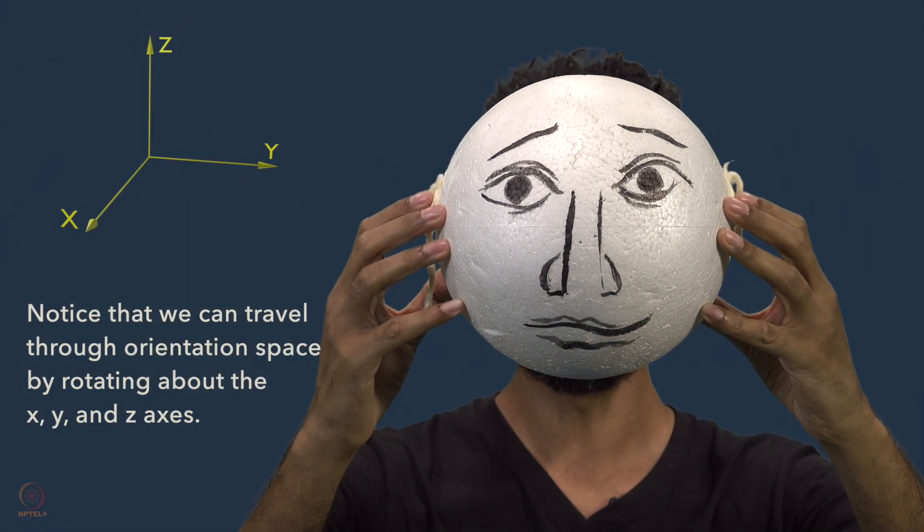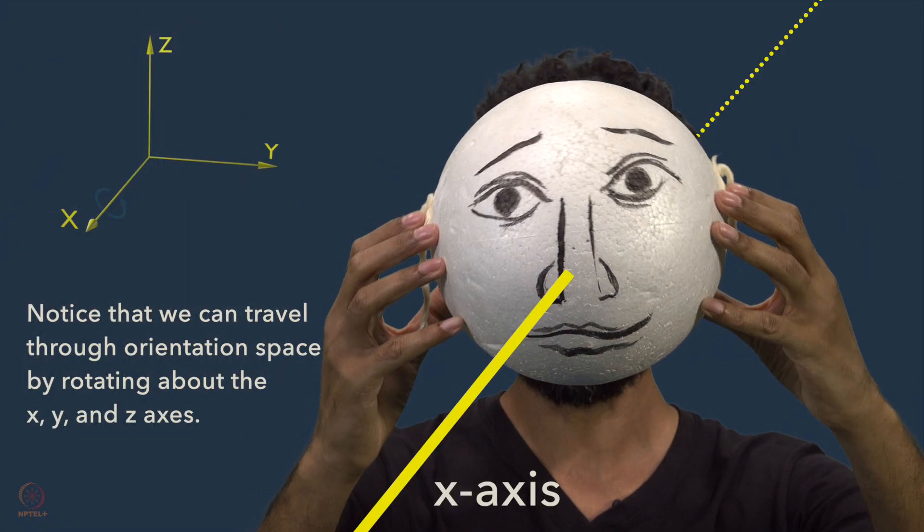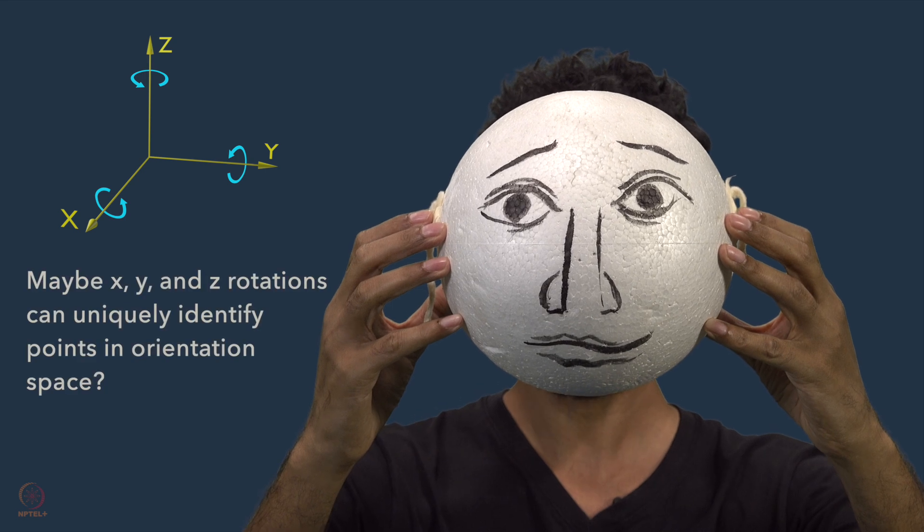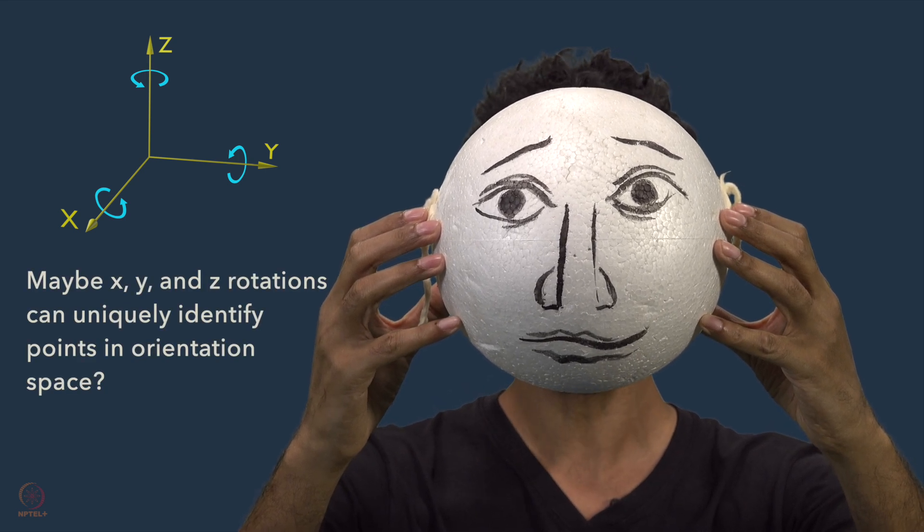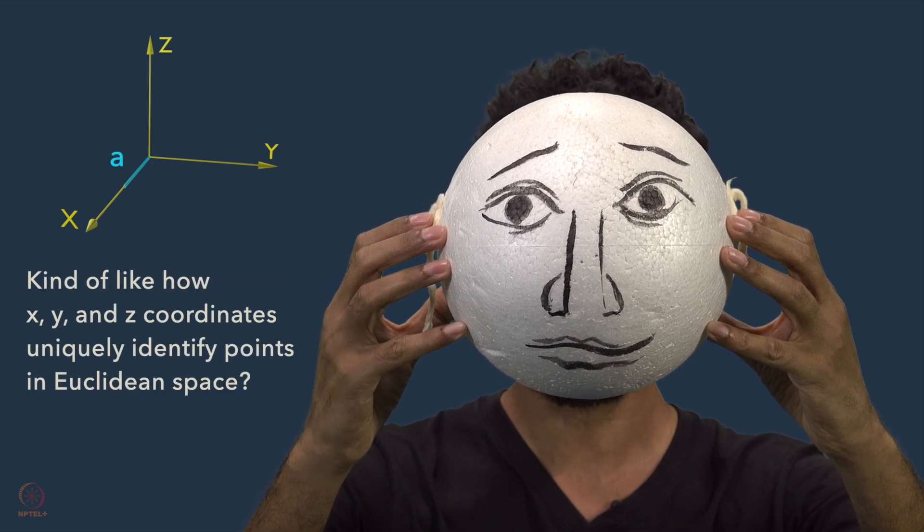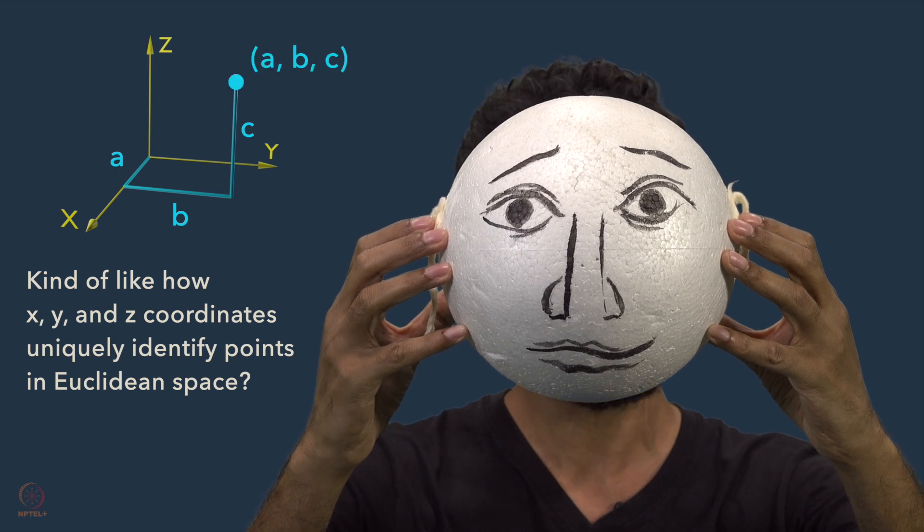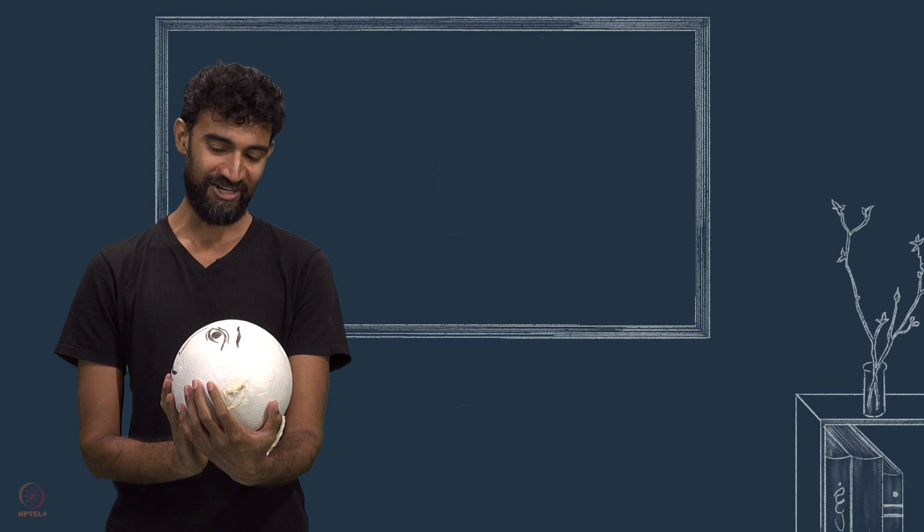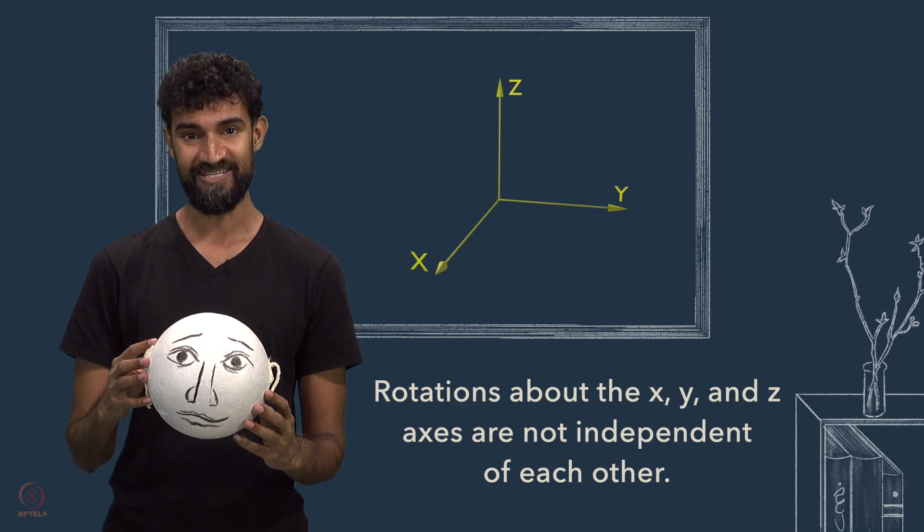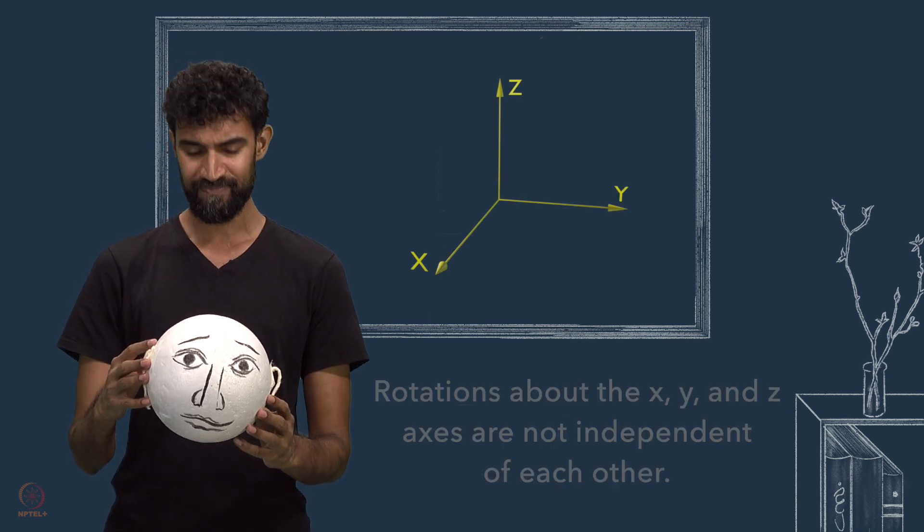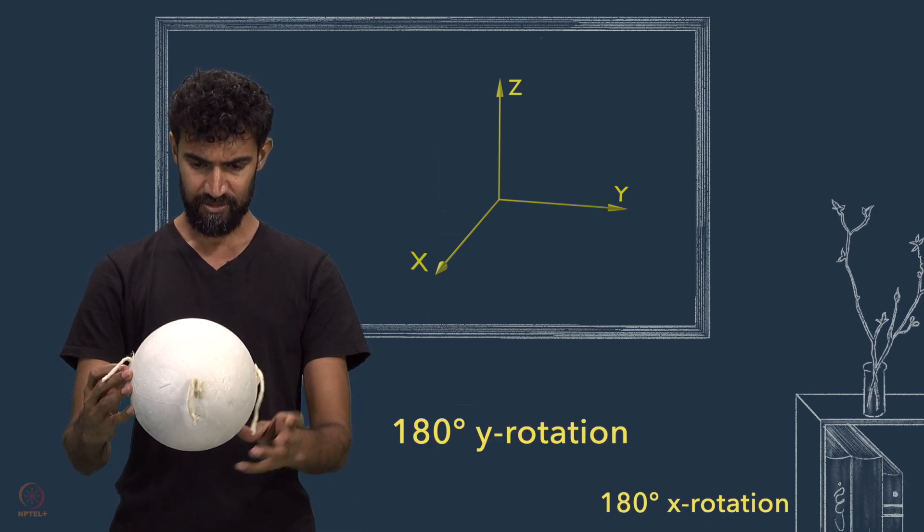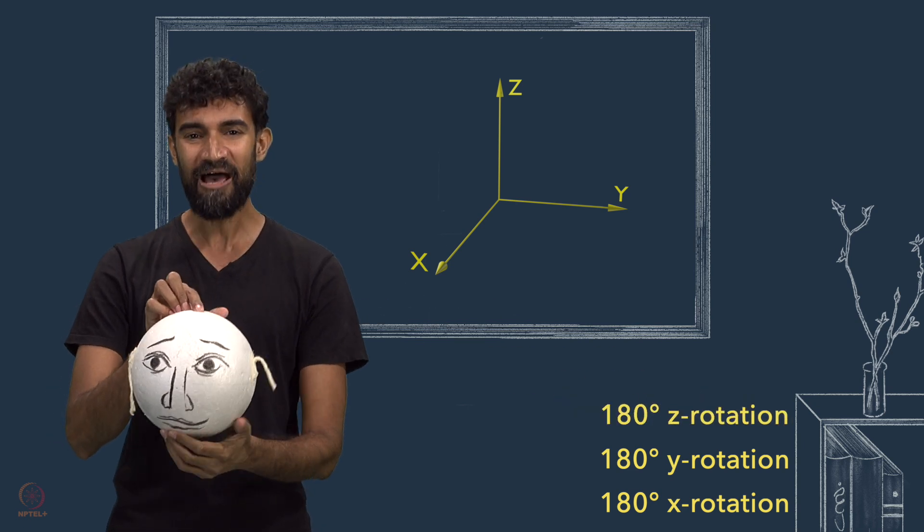Notice that we can travel through orientation space by rotating about the x, y, and z axes. So, maybe x, y, and z rotations can uniquely identify points in orientation space. Kind of like how x, y, and z coordinates uniquely identify points in Euclidean space. No, not really. The analogy breaks down. Because rotations about the x, y, and z axes are not independent of each other. They're somehow entangled.